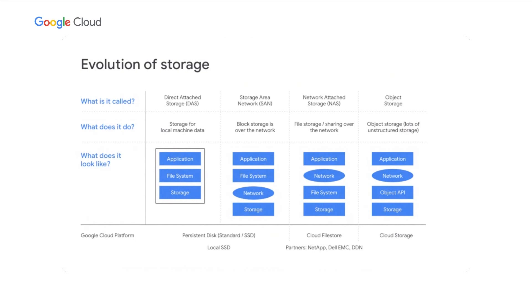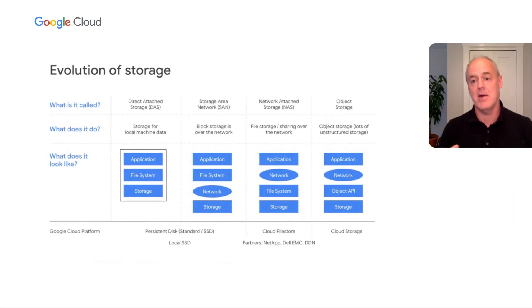So a brief history of storage and databases. Different categories of storage have developed over the years — these are the main ones. Starting at the left is direct attached storage, which is storage physically attached to the local machine. Your laptop or desktop machine has this, where the storage is physically attached to the device. The file system sits locally and the applications run on the device as well. These are super high performance, great for day-to-day work. One downside is it's a very localized and sealed system — you can't easily share data with others; you have to go over the network.